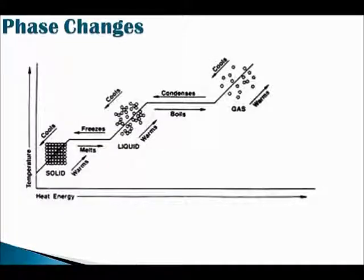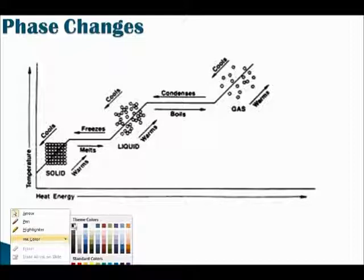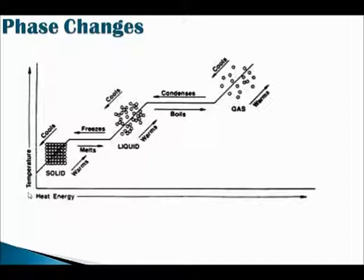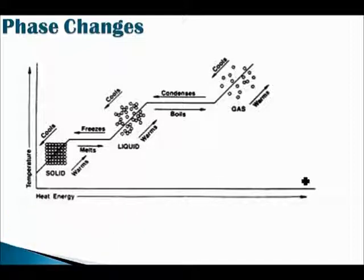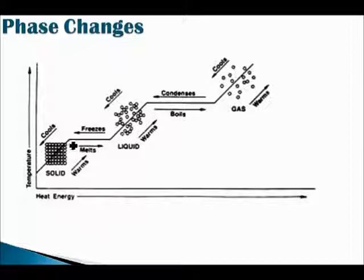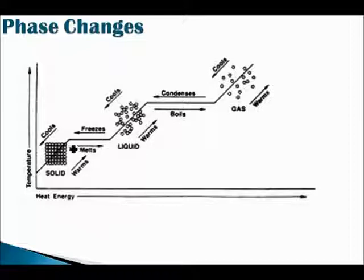Sorry, some technical difficulties. So it brings us to phase changes. Here you have temperature on the y-axis and heat energy on the x-axis. As heat energy increases, let's see what happens to temperature. Starting with a solid material like an ice cube — as heat energy increases, temperature increases too, meaning the kinetic energy of the particles in the solid also increases. Then at a certain point, as more heat energy goes in, the temperature stays constant.